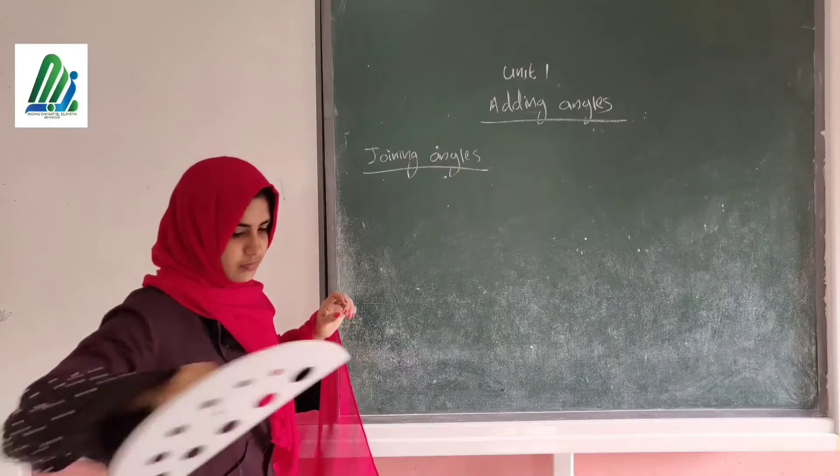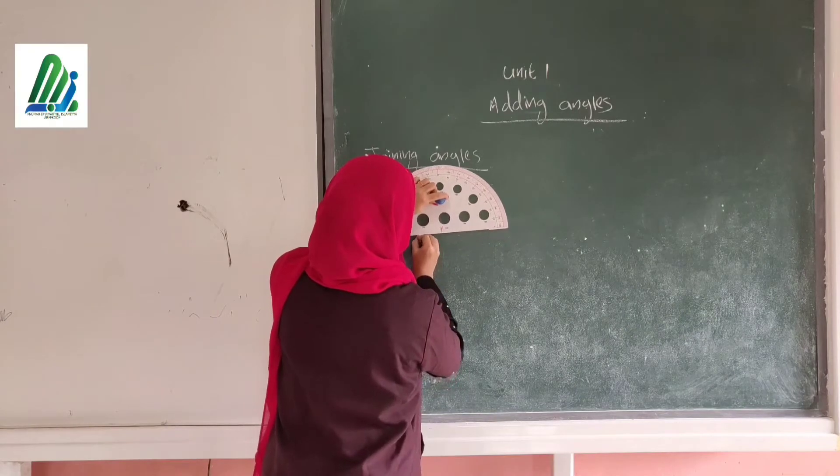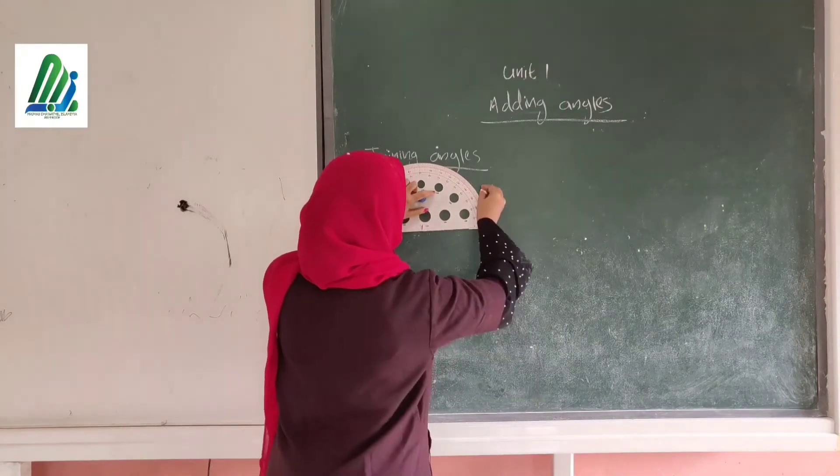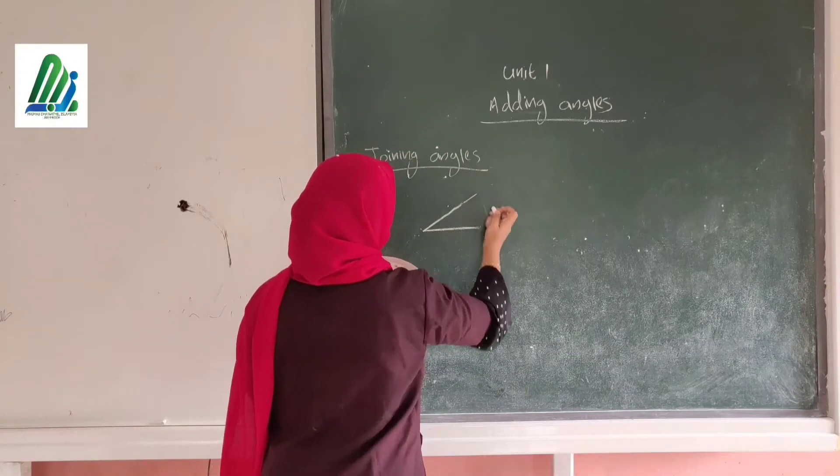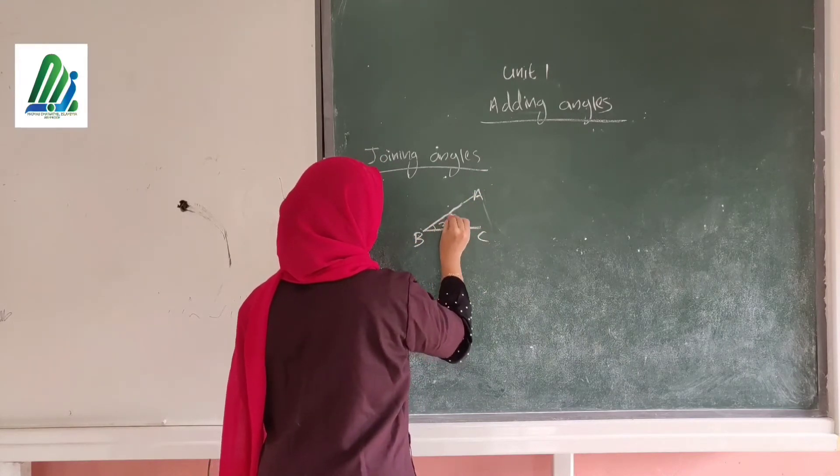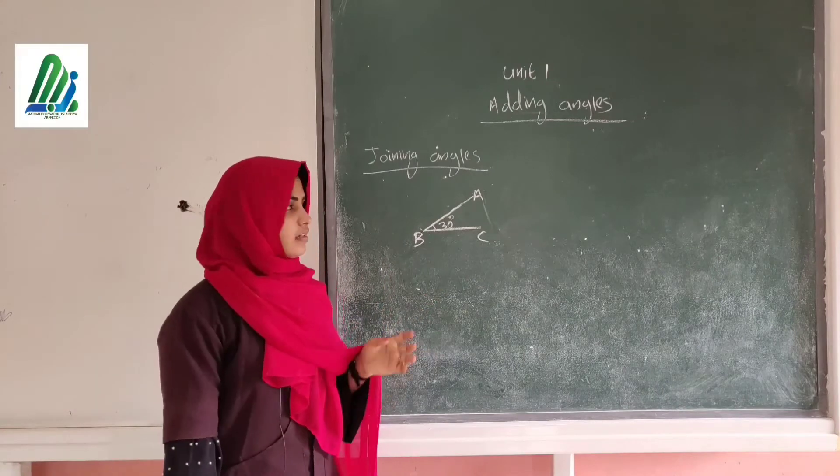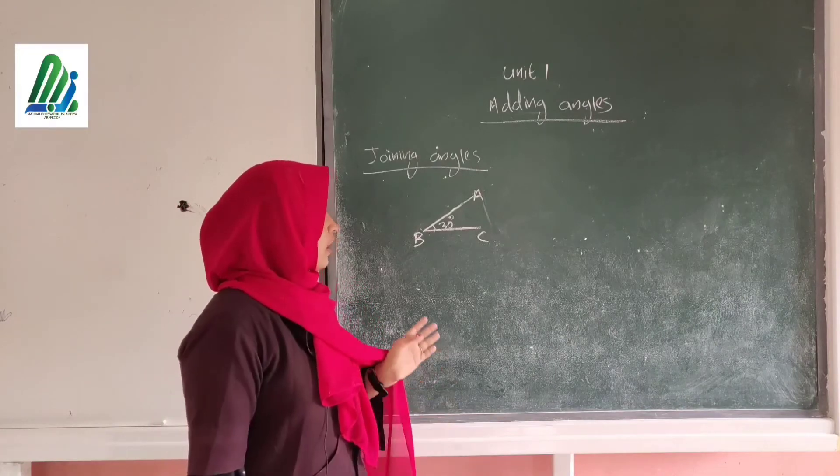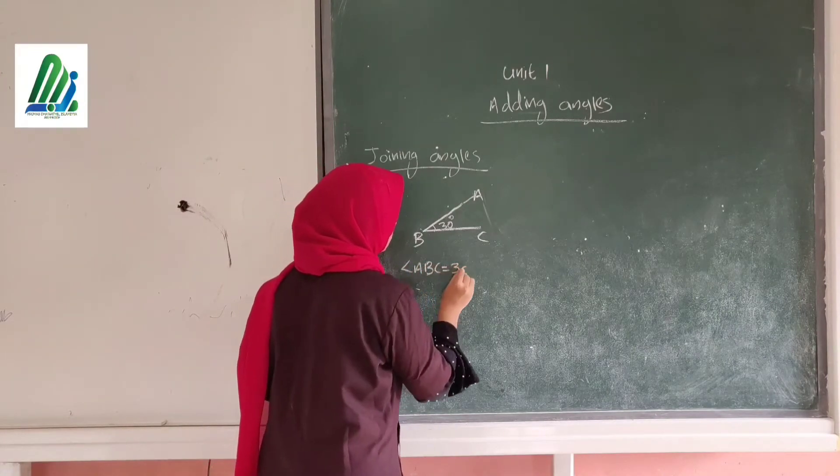Joining canvas. So can you draw this angle ABC? In 6th standard you have already learned how to draw an angle using a protractor. Here the angle ABC is given.